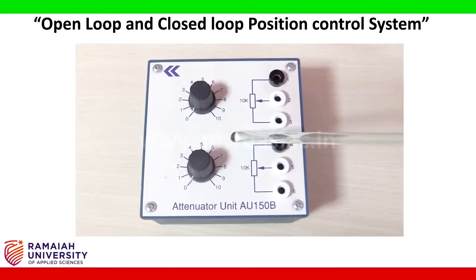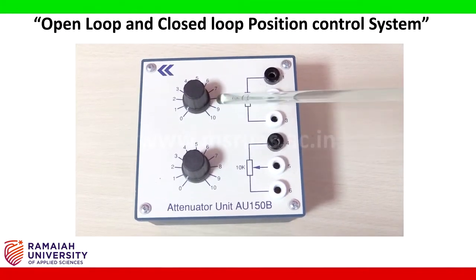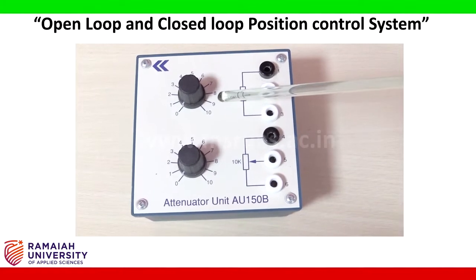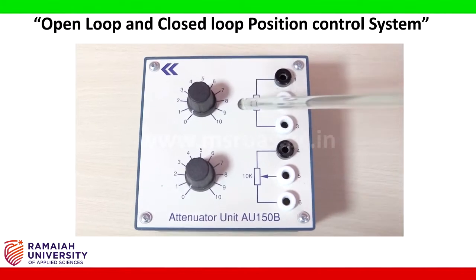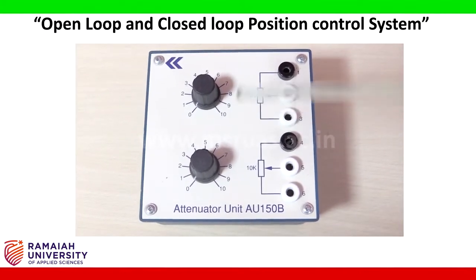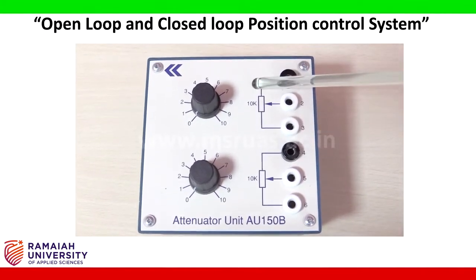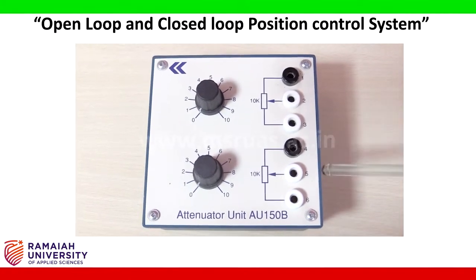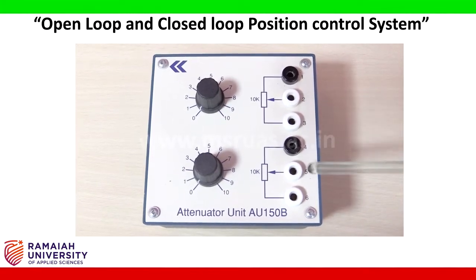The attenuator unit: this contains two variable 10kΩ potentiometers. The two knobs are graduated from 0 to 10, so we can vary the resistance up to 10k. Different resistance values can be taken using these two sets of terminals.